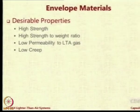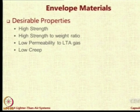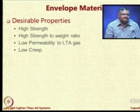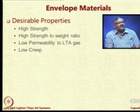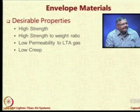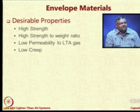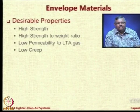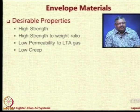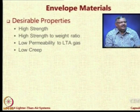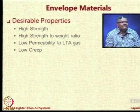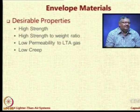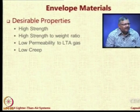The next required property is creep resistance — it should be high. Creep is the failure of a material due to prolonged exposure to loading. In an LTA system, you deploy it for weeks or months. A fabric might take a lot of load for a short time, but when exposed to one month of loading, it may start deforming faster. We want a material to have very low creep propagation or very high creep resistance.